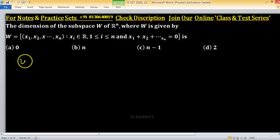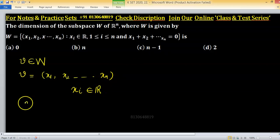So any element, suppose v is any element of W and v is order pair x1, x2 and so on, x2, xn. This constituent xi belongs to set of real numbers and is satisfying a condition, sum of all these equals to zero.